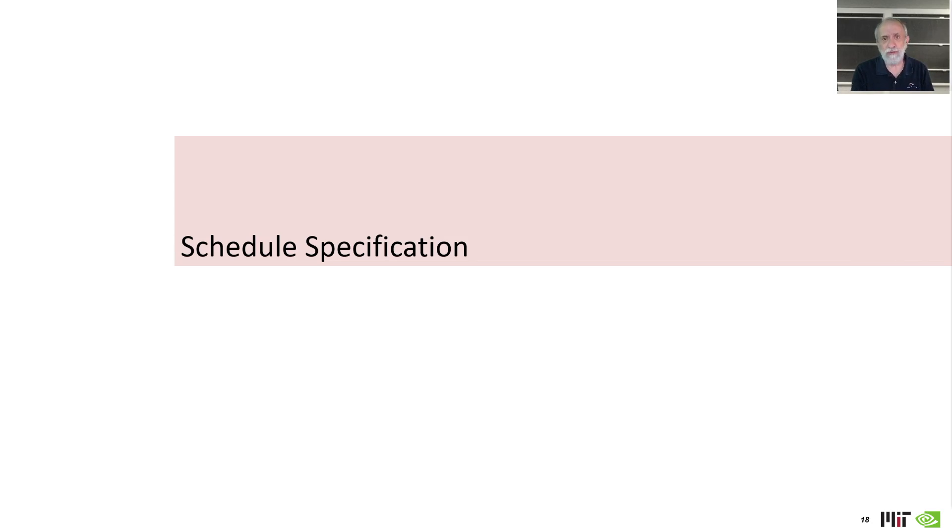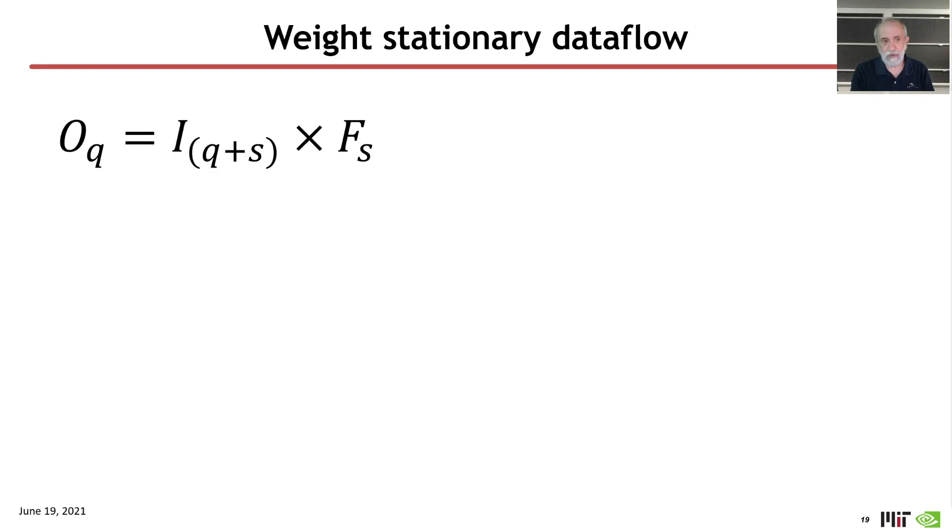And so what I'm going to do is go through a couple of simple examples of how to schedule those operations, and what we're going to do is look at just one-dimensional convolution as an example. So if we want to talk about the specification of that problem, then the specification is going to be expressed in the einsum kind of notation that we talked about before. We have a set of input activations, we have a set of filter weights, and we're going to generate an output.